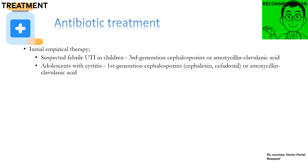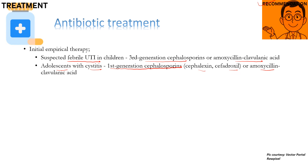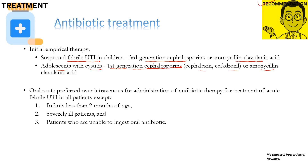The initial empirical therapy recommendations state that in patients with suspected febrile UTI, 3rd generation cephalosporins or amoxiclav should be used. In adolescents with cystitis, 1st generation cephalosporins — which include cephalexin and cefadroxil — or amoxiclav are to be used. Oral route is preferred over IV route for administration of antibiotic therapy for treatment of acute febrile UTI in all patients.